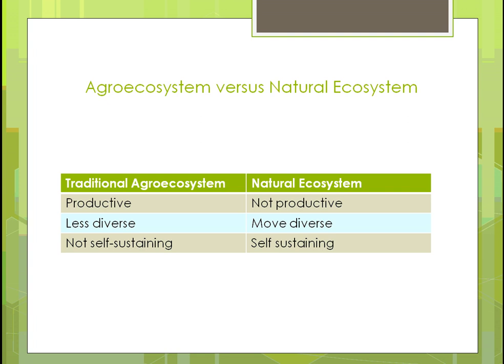If you look at an agro system versus a natural ecosystem, there are differences between the two. A traditional agricultural ecosystem is a productive one — we produce a lot of food from it. In a natural ecosystem, it's not going to be as productive, so one challenge is how can we feed the world if we're going to try to get closer to a natural ecosystem. In a traditional agroecosystem, the diversity is not as great, but more diverse ecosystems have more natural interactions between plants and animals that help the environment.